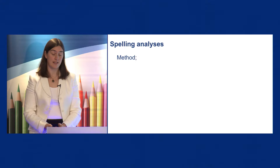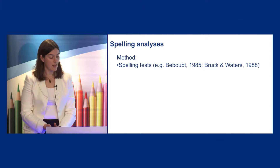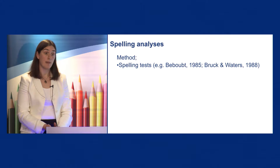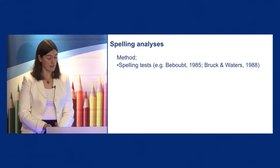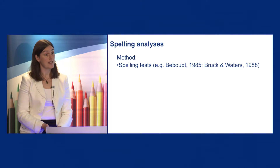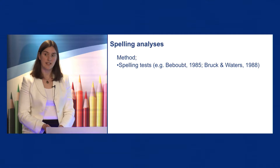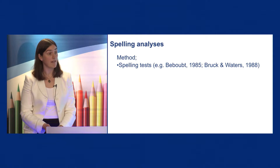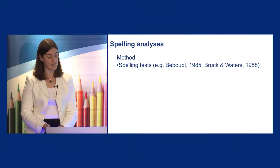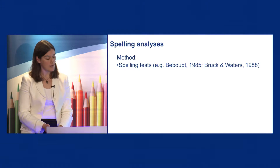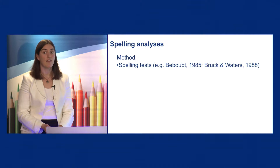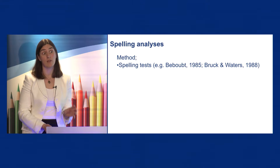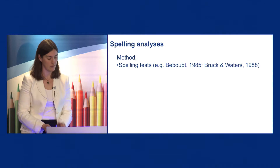Several studies have investigated spellings through spelling tests. For example, Abbott in 1985 used a gap-filling exercise to generate lists of spelling errors, whilst Brook and Waters in their study and Coleman et al. in 2009 used dictated spelling lists. These studies have allowed researchers to carry out detailed analyses of students' spellings for particular words, and also to look at concepts such as phoneme-grapheme correspondence — that is, how well the letters that students write down correspond to the sound of the word.